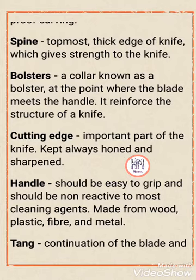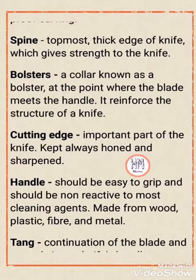Next is the bolster. The bolster is a collar found at the point where the blade meets the handle. It reinforces the structure of a knife and is helpful in the grip of the knife. The bolster is essentially the junction between the blade and the handle, and we call it the bolster because it provides grip at that junction.